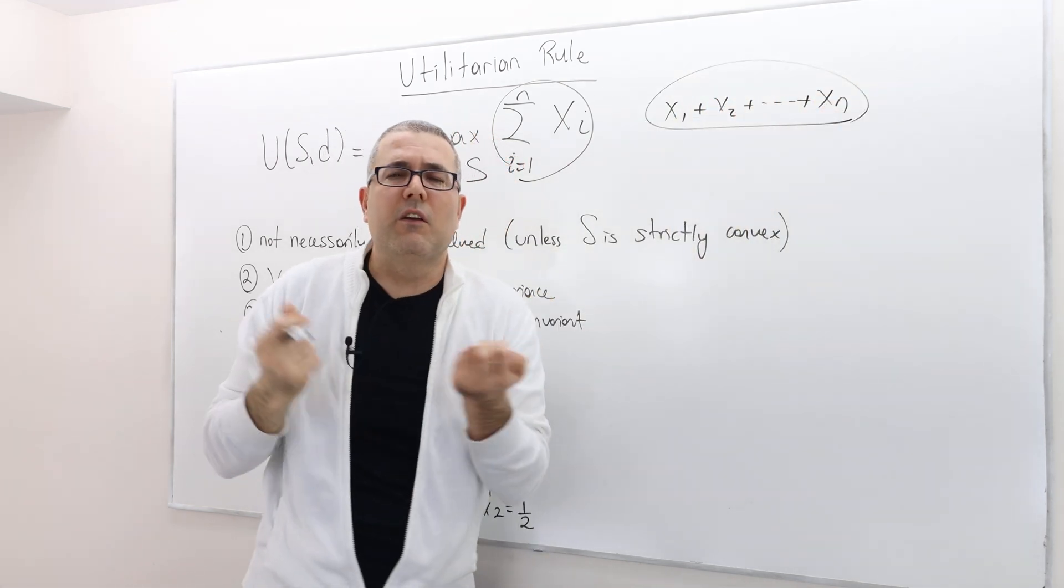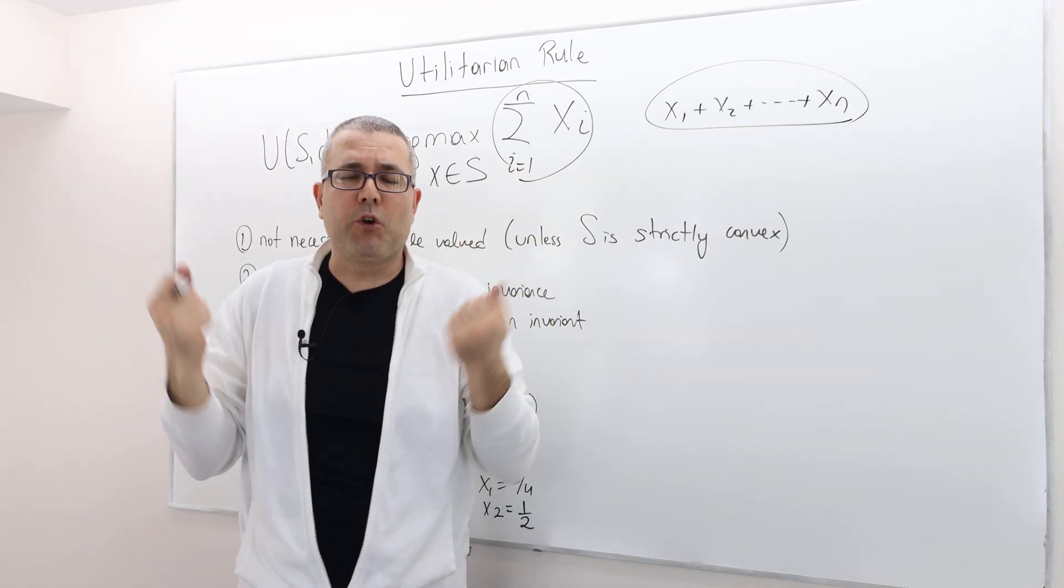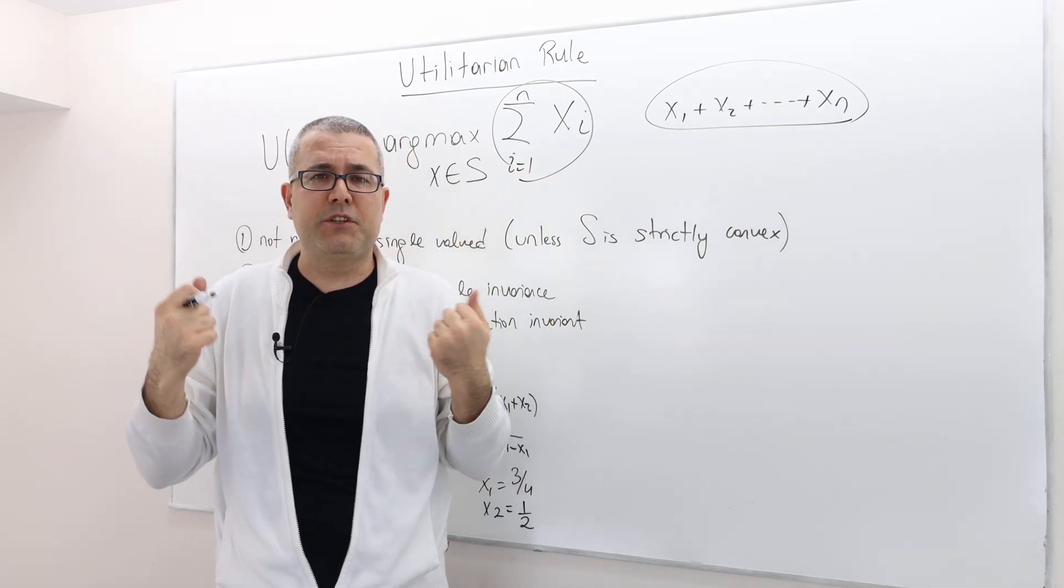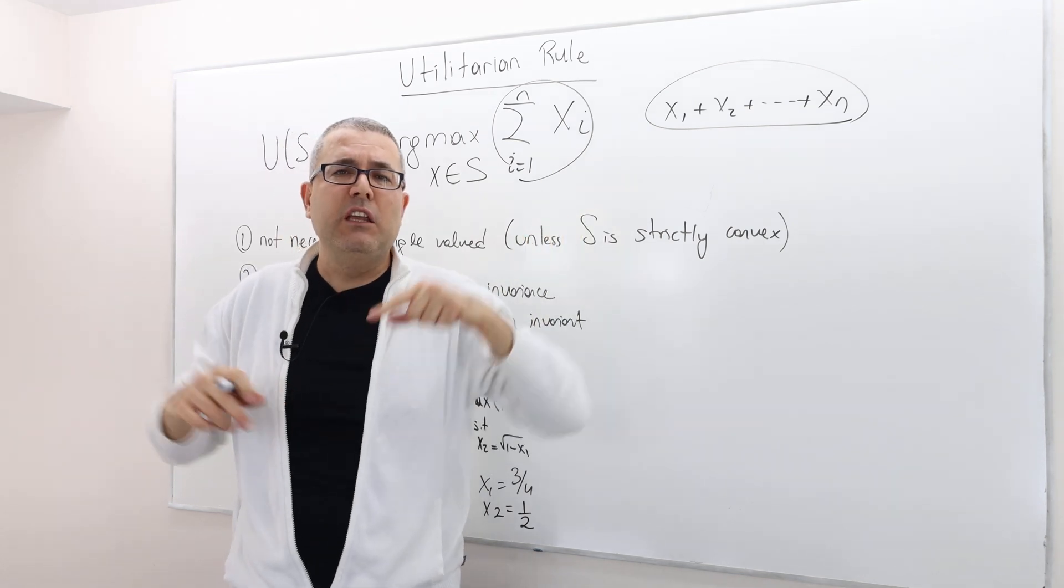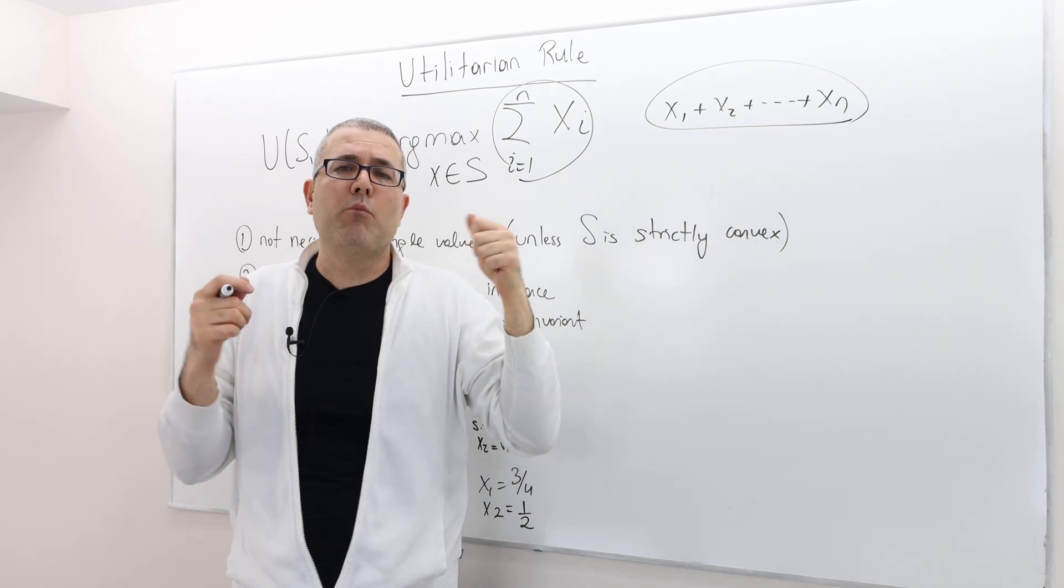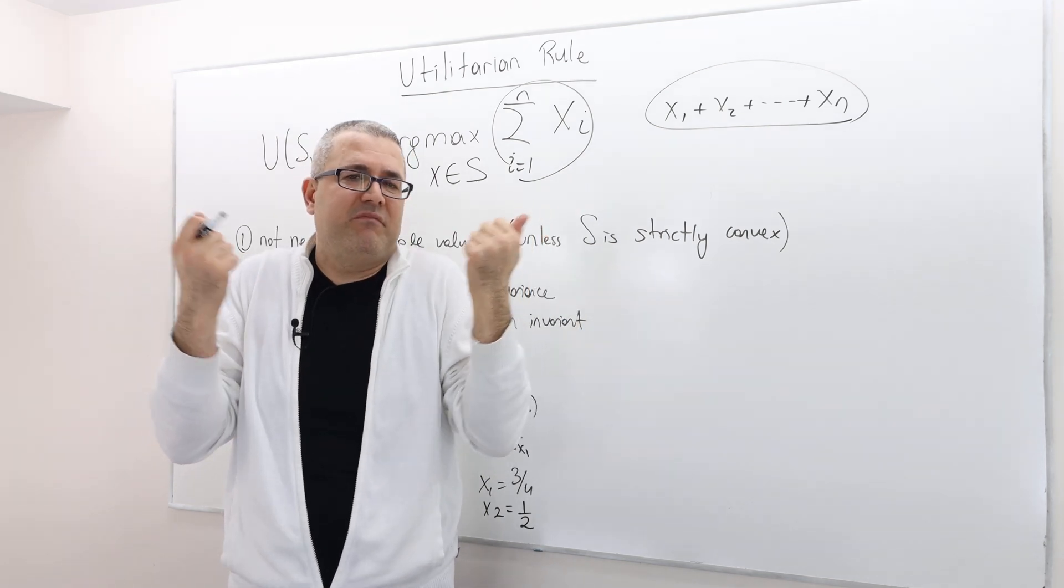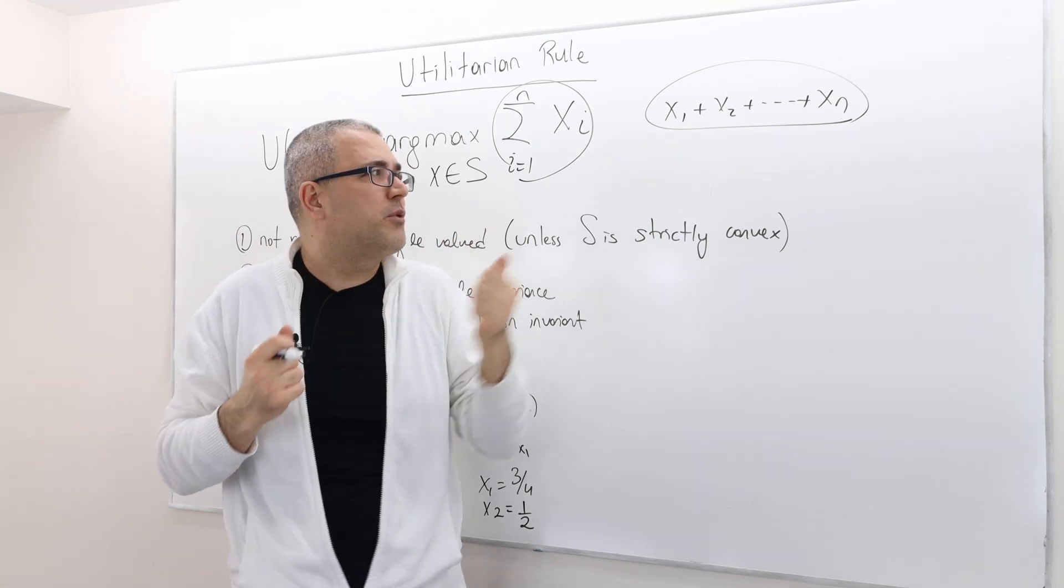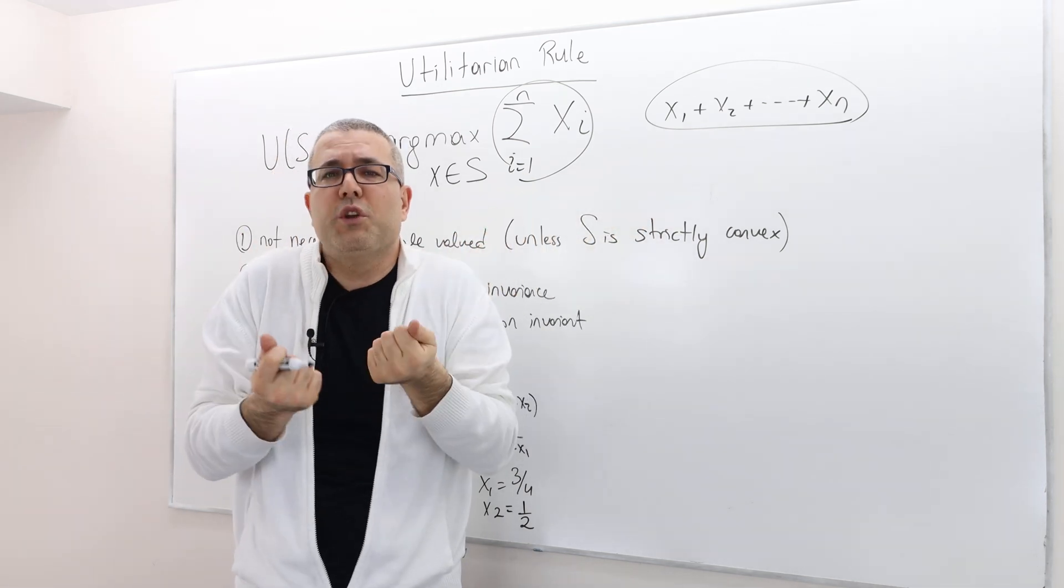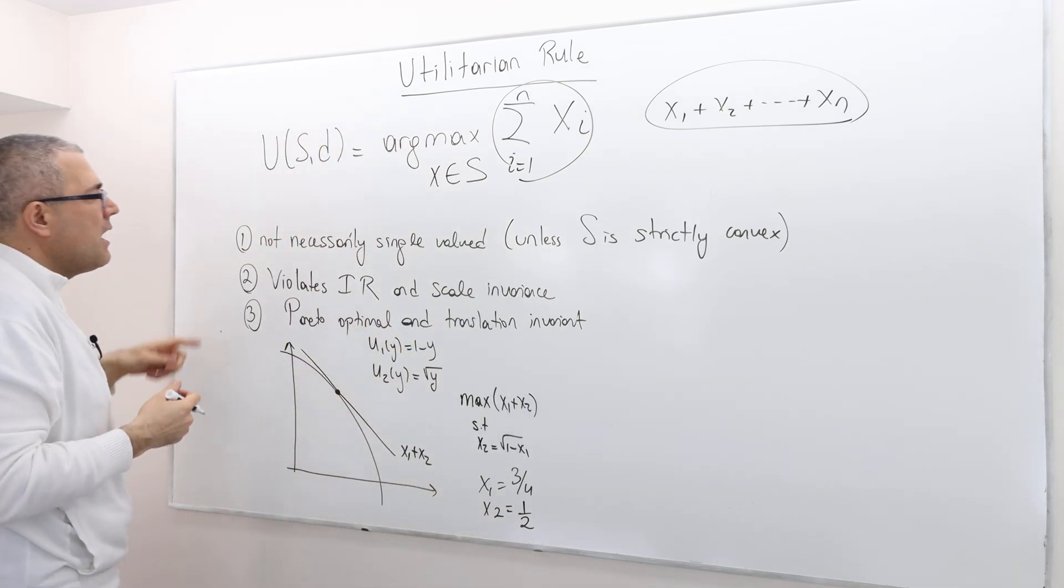We basically think of each individual as perfectly substitutable. So if one agent gets incredibly high utility, then we should give this guy more surplus. If one guy really doesn't care much about this bargaining problem, we should give him less surplus.